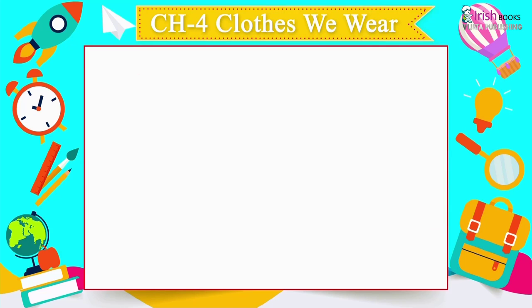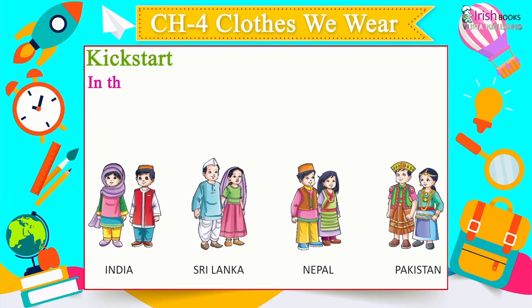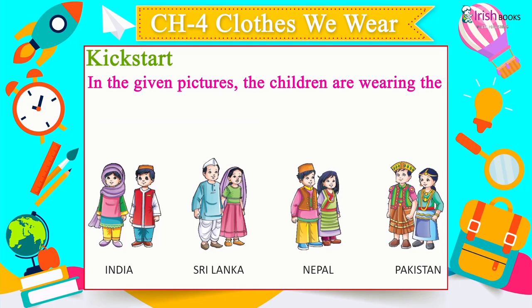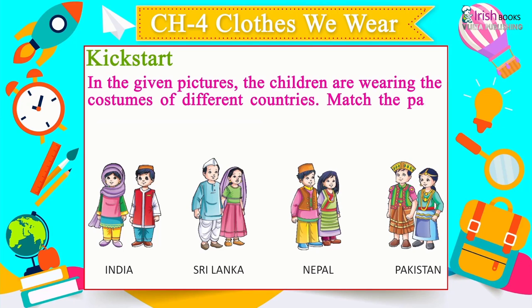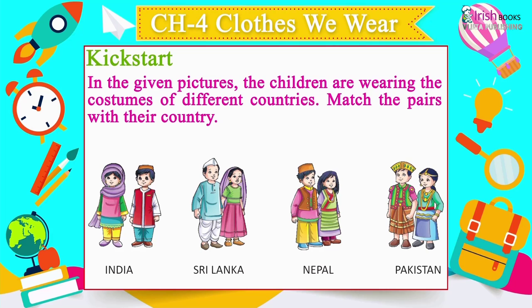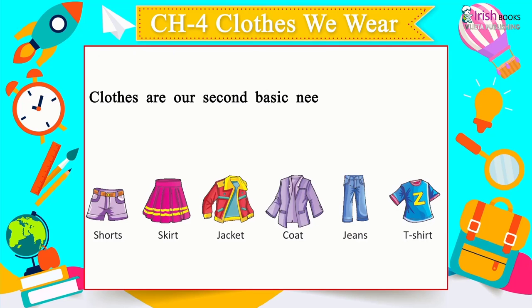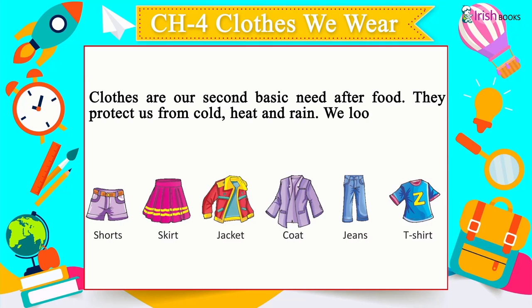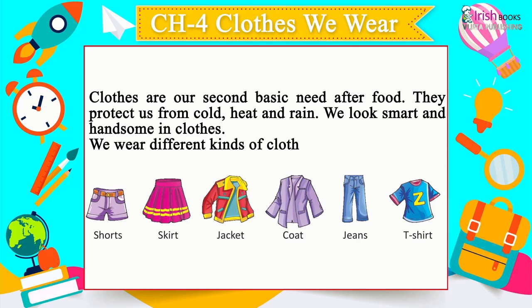Chapter 4: Clothes We Wear. In the pictures, children are wearing costumes of different countries — India, Sri Lanka, Nepal, Pakistan. Clothes are our second basic need after food. They protect us from cold, heat and rain. We look smart in clothes. We wear different kinds of clothes in different seasons — shorts, skirt, jacket, coat, jeans, t-shirt.